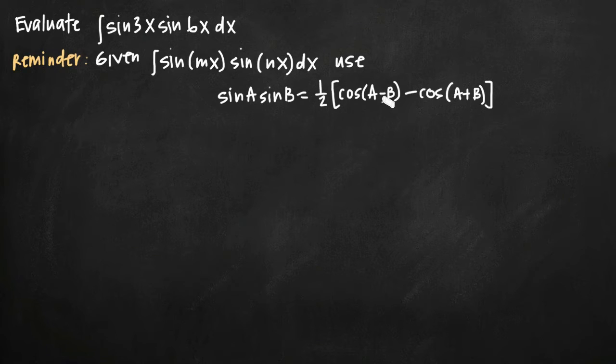So the first thing you want to do is identify values of a and b. Notice here that we have two sine functions, so you could really pick 3x for a and 6x for b or vice versa, and it wouldn't really matter because you could have had these two sine functions flip-flopped as in sine of 6x times sine of 3x. So how do you know what to pick for a and b?